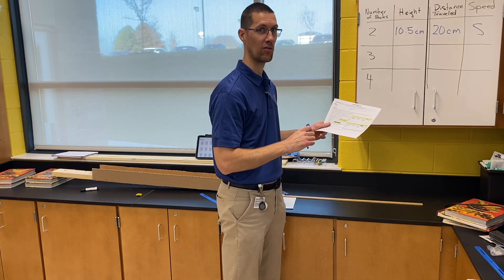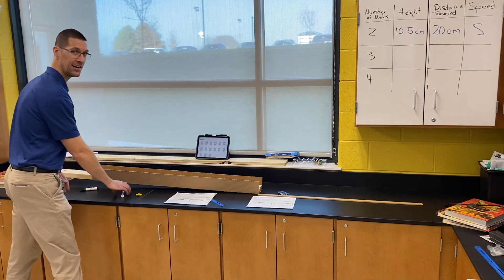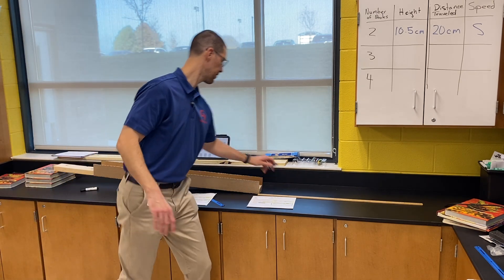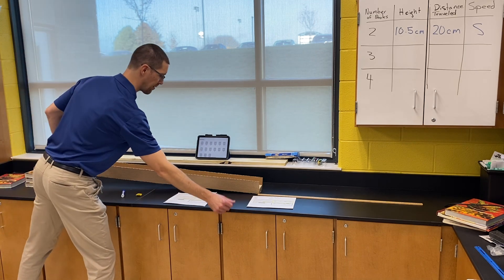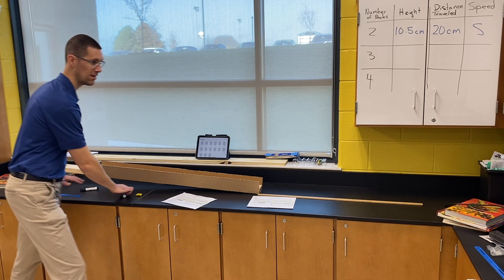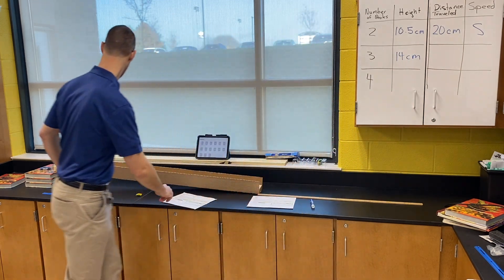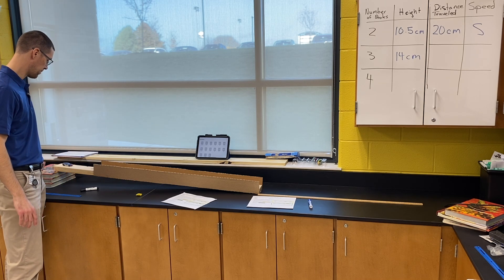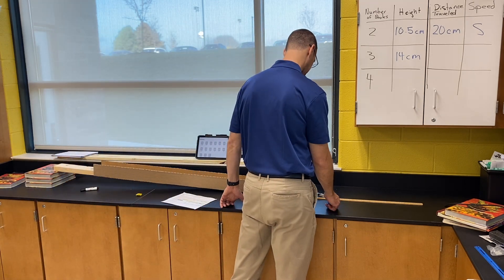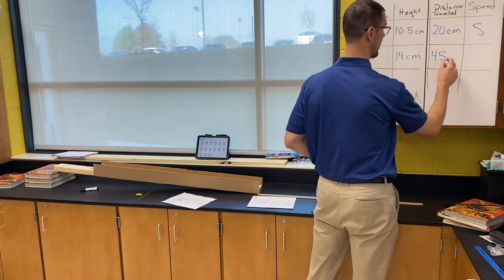We're going to skip adding the weight for now and come back to that in a minute. Let's repeat the step but only increase the number of books. I'm going to add an additional book, so now we have three books raising the ramp. Let's measure the height again — in centimeters, that comes out to be 14 centimeters. Now we roll the car with back wheels at the edge. That one went almost 45 centimeters — go ahead and round up and record that in your chart in the yellow unweighted table. That one went about medium.